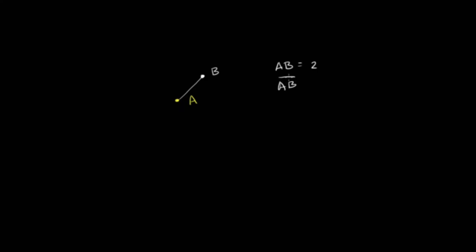This would refer to the actual line segment. But if I talk about its length, I would get rid of the line on top and just say AB is equal to 2 — if I wanted to put units, 2 centimeters. But I'm not curious just about B. I want to think about all the points — the set of all points that are exactly 2 centimeters away from A. So I could go 2 centimeters in the other direction to point C, and AC is also 2 centimeters. But I could go 2 centimeters in any direction.